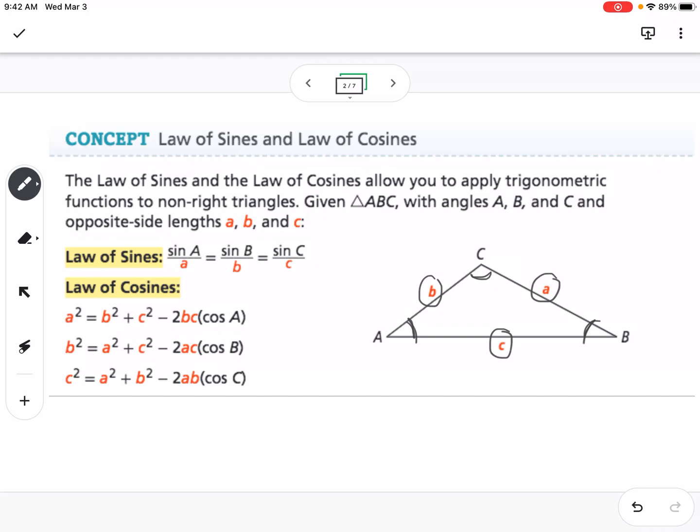Now Law of Cosines is A squared equals B squared plus C squared minus 2BC cosine of A, depending on what side you're looking for. And then we can also use Law of Cosines to solve for a missing angle if we need to.